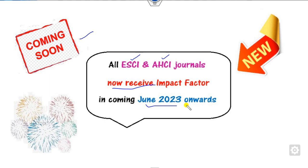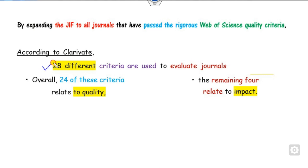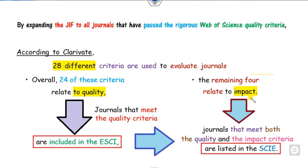When the Web of Science extends the journal impact factors to these two categories, they will satisfy certain criteria. There are a total of 28 criteria, out of which 24 depend on the quality of the journals and the remaining four relate to the impact of their published articles. Journals satisfying the 24 quality criteria are indexed in Emerging SCI, while those satisfying all 28 criteria are included in the SCI index journals.